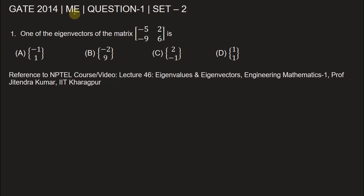This question is from GATE Mechanical Engineering 2014, question number one of set two. The question asks us to find one of the eigenvectors of a given matrix among four options. We need to determine which one is the correct eigenvector for this given matrix.